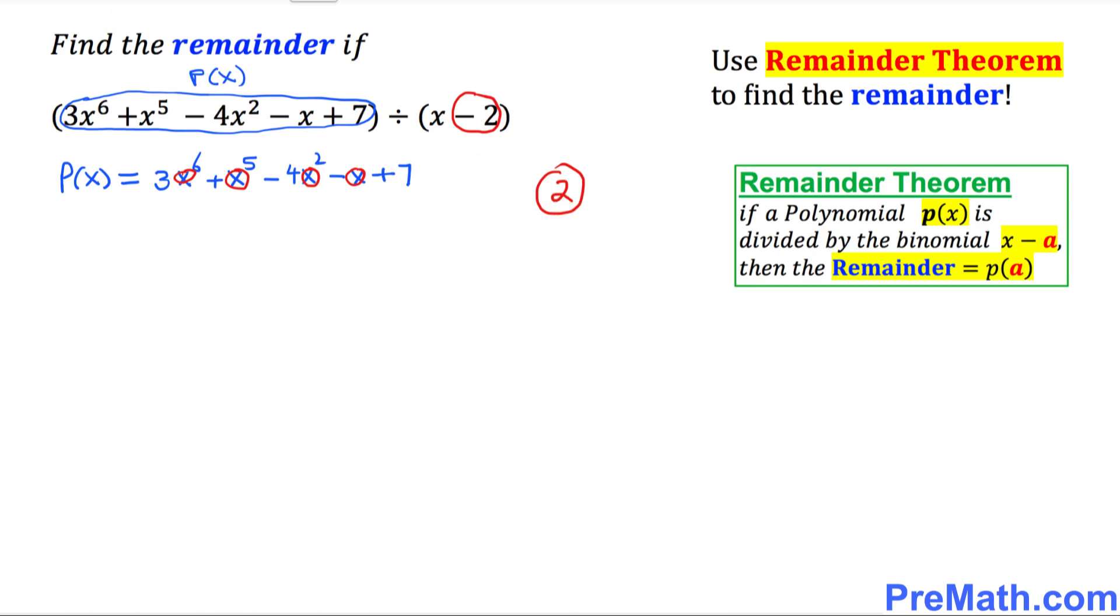This gives us p(2) = 3(2^6) + 2^5 - 4(2^2) - 2 + 7. That's pretty much it. Let's simplify now.